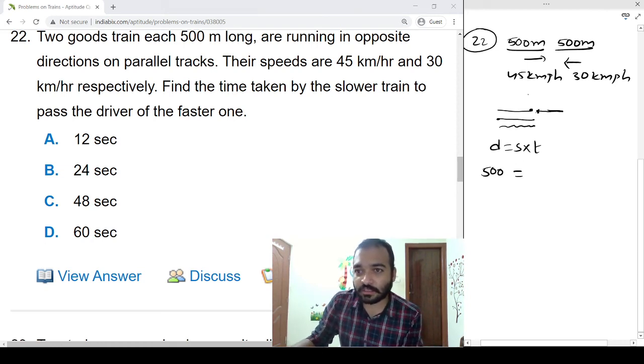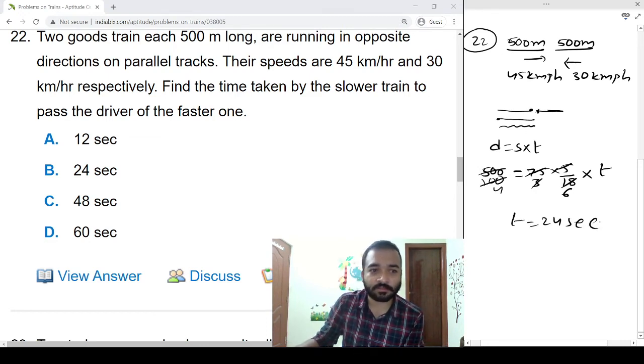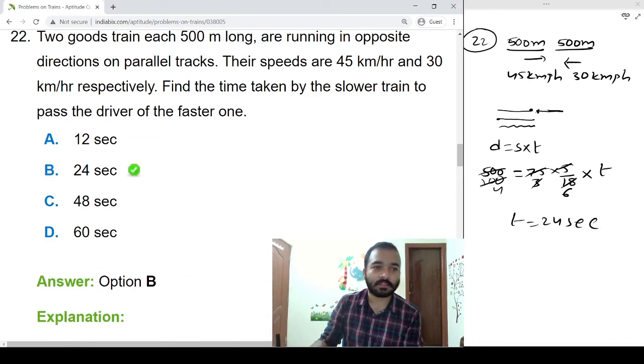Speed is opposite direction, so 75 into 5 by 18 into time. This is 100, 25 double 4, 3, 3 double 6 times. T is equal to 24 seconds.